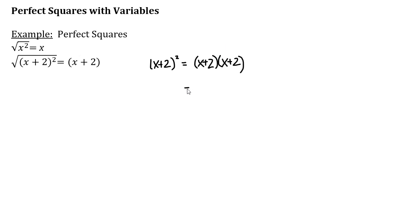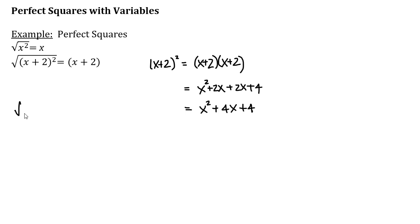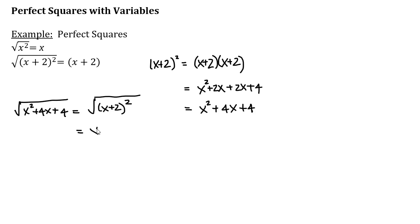If I foil this out, I will get x squared plus 2x plus 2x plus 4, or x squared plus 4x plus 4. So that actually means the square root of x squared plus 4x plus 4 equals the square root of the perfect square x plus 2 all squared, which equals the quantity x plus 2.